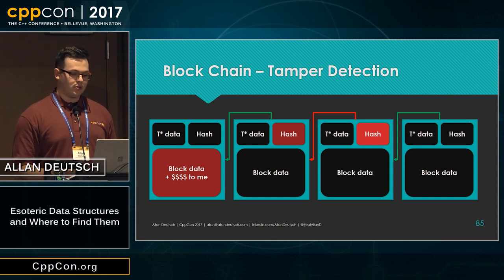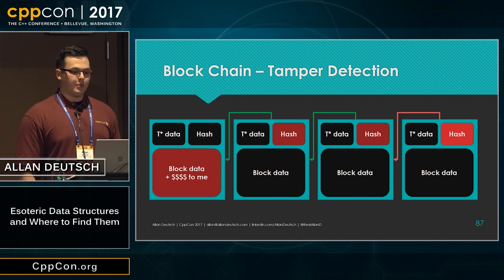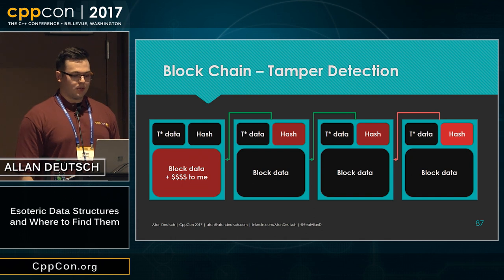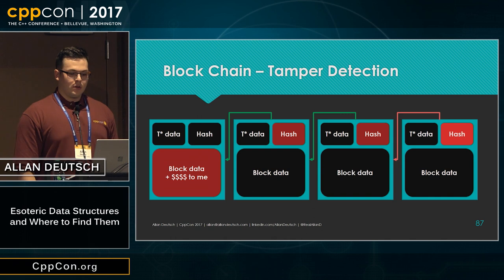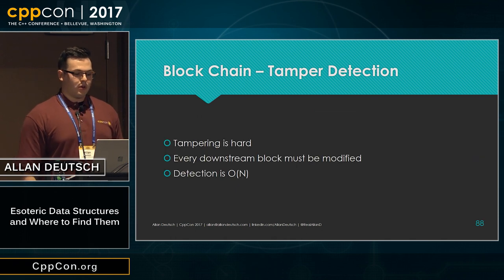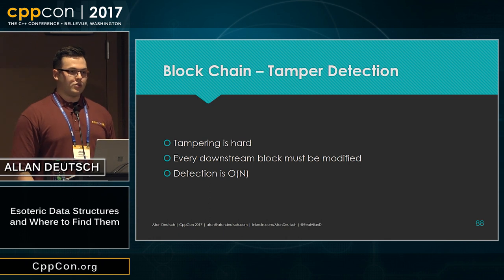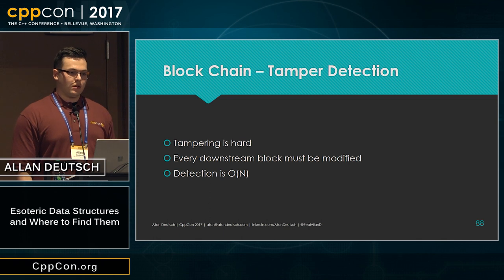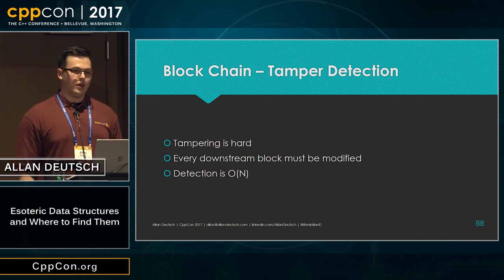In order to fix this, they'd have to change the next hash as well — and they run into the same problem again with the newest item on the blockchain. The hash has been invalidated and will no longer be an accurate representation of the previous block. With blockchains, tampering is really hard and every downstream block must be modified in order to have a successful attack. The downside is that detecting these attacks is an O(n) operation — you have to go through all of the entries in the blockchain after it in order to detect it correctly.